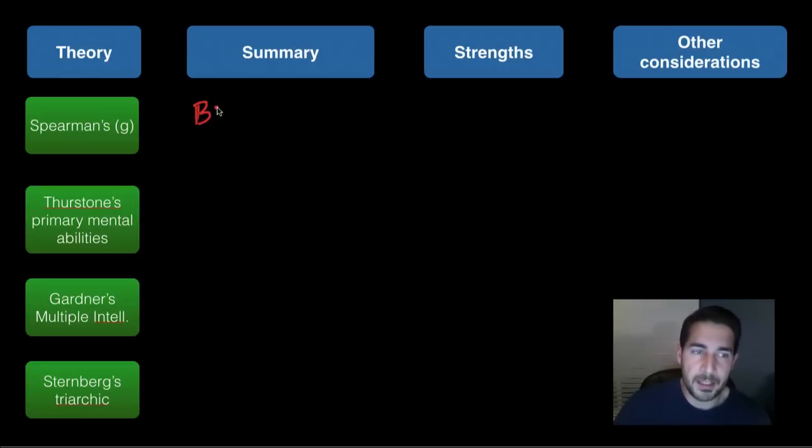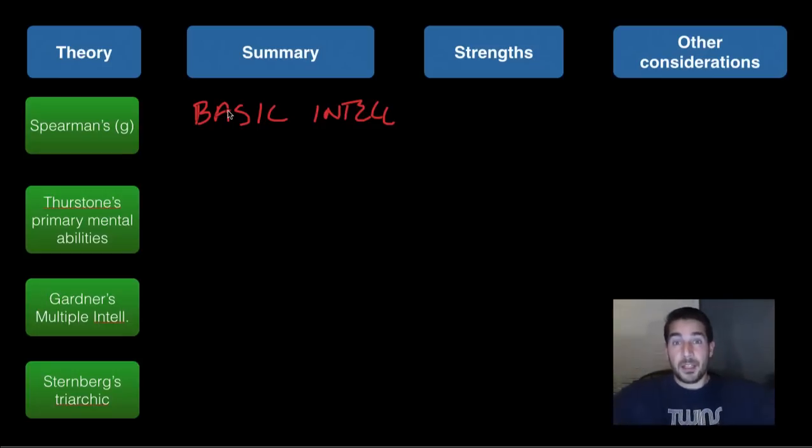In the summary, this is just your basic intelligence. Remember Spearman's G basically is underlying intelligence level and that affected basically every other part of your intelligence. So if you were high general intelligence, you'd be pretty good at everything, right? And then you'd get really good at things more quickly than somebody at a lower general level.